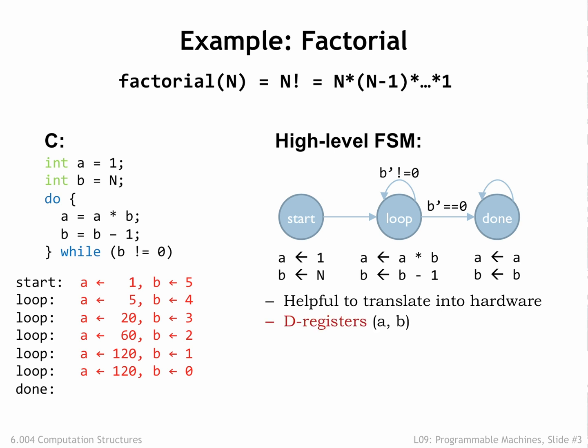We'll use 32-bit D registers to hold the a and b values. And we'll need a 2-bit D register to hold the 2-bit encoding of the current state, i.e., the encoding for either start, loop, or done.